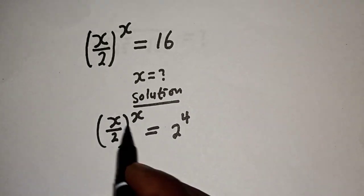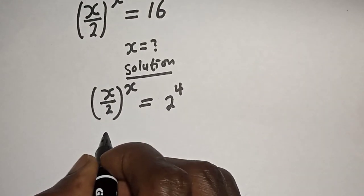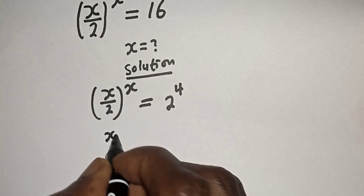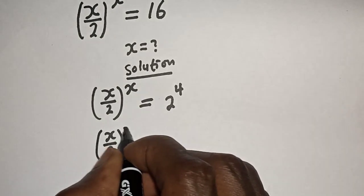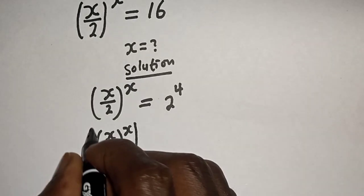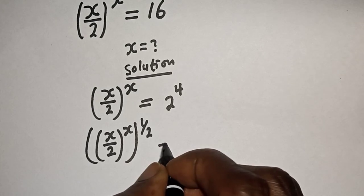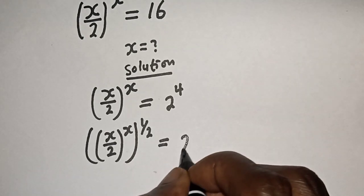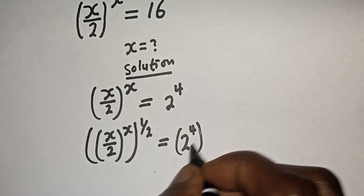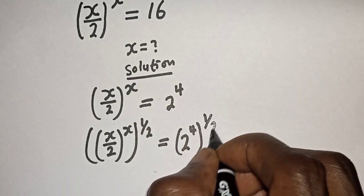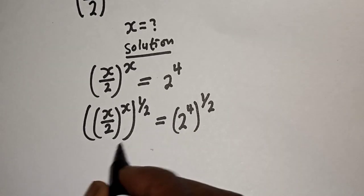Now let's raise both sides to the power of 1 over 2. That is: (s over 2) raised to power s, then raised to power 1 over 2, is equal to 2 raised to power 4, raised to power 1 over 2.